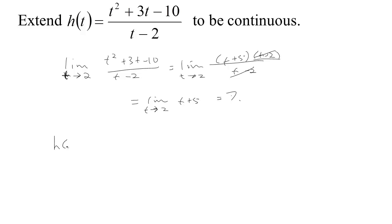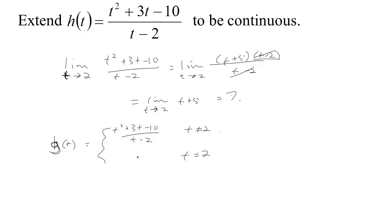So we can fix this function if we simply make a new function — let's call it g. We have the old function which is t squared plus three t minus ten over t minus two. That's continuous so we'll let it be that as long as t is not two. And if t is two, we found that the limit was seven, so we'll define the value of g at two to be seven. That way the limit as t tends to two of g of t is seven, and that matches the value of the function at two, so now it's continuous at two.